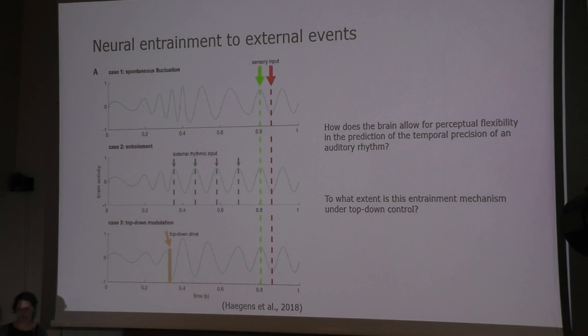Neural entrainment offers a very parsimonious explanation for how temporal prediction of events that are periodic could be performed. This concept is visualized here in this schematic figure, showing how the phase of the oscillation resets to the external input.